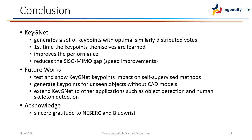In summary, we introduced Key-GNet, a network based on graph convolution designed to operate on point clouds, producing a set of keypoints with optimally distributed votes. To the best of our knowledge, Key-GNet is the first approach where the keypoints themselves are learned rather than being heuristically selected, for example using FPS. These optimal keypoints significantly enhance performance when tested across three keypoint voting-based methods. Furthermore, eliminating the SISO-MIMO gap improves the speed of these methods while maintaining comparable accuracy.